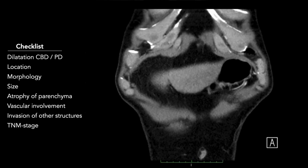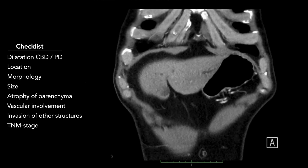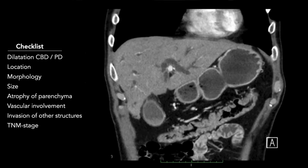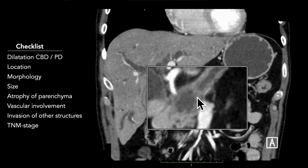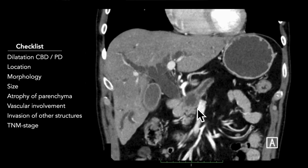Welcome to this second video lecture — a slightly more advanced case, but we will follow the same steps. For an overview, I'll show you the coronal format of the late arterial phase first. There is clear dilatation of the bile ducts, both intrahepatic and extrahepatic, as well as dilatation of the main pancreatic duct. Both can be followed up to an obstructing lesion in the head of the pancreas, next to the superior mesenteric vein.